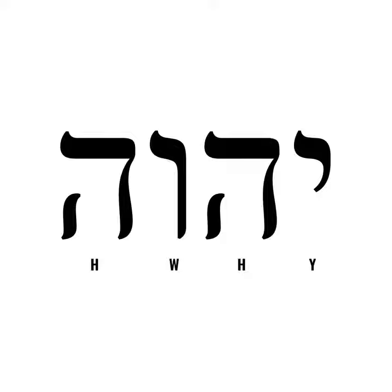He told Moses to tell those who asked his name that it is 'I am.' Then Moses said to God, 'If I come to the people of Israel and say to them, the God of your fathers has sent me to you, and they ask me, what is his name? What shall I say to them?' God said to Moses, 'I am who I am.' And he said, 'Say this to the people of Israel: I am has sent me to you.' — Exodus 3:13-14.